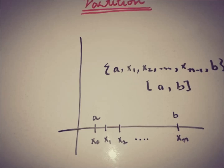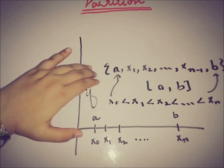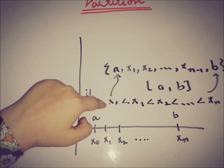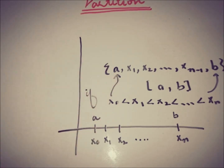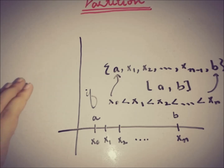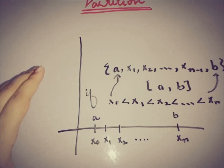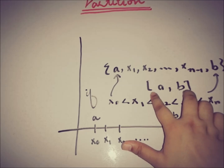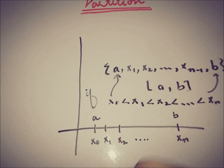So again, if we have a finite set of real numbers with this ordering property, then this will be a partition of the closed interval [a, b]. This is the definition of a partition that we will use when we go on to define what is meant by an integral in rigorous terms.